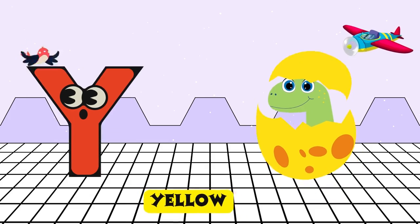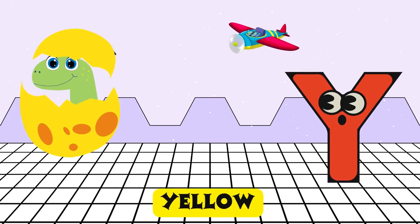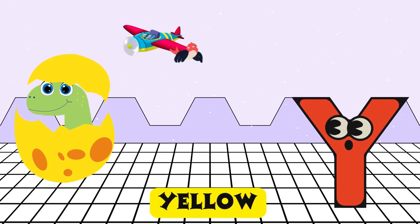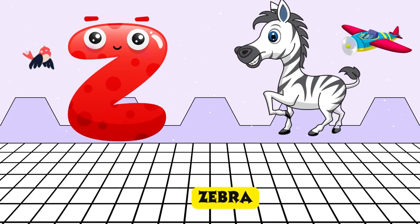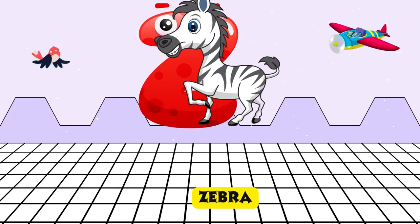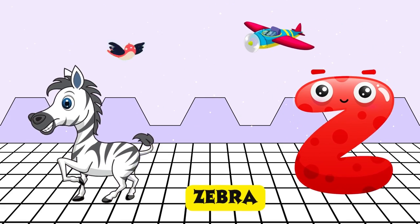Y is for yellow, y-y-yellow. Z is for zebra, z-z-zebra.